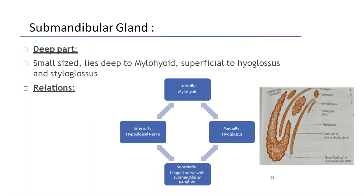The deeper part is small in size, lies deep to mylohyoid and superficial to hyoglossus and styloglossus. Relations of the deep part: laterally the mylohyoid, inferiorly the hypoglossal nerve, medially hyoglossus, and superiorly the lingual nerve with the submandibular ganglion.